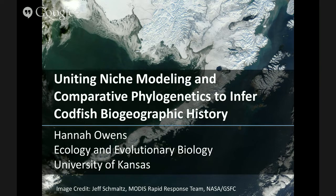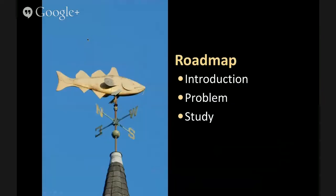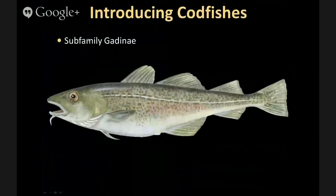When I say codfishes, I'm referring to the subfamily Gadinae. These fishes are mostly defined by their fin placements. This is a monophyletic group with three dorsal fins, two anal fins, and pelvic fins placed in front of and below the pectoral fins. Most of these fishes also have a single barbel used for sensing when foraging on the sea floor, so a lot of these species are actually benthic.